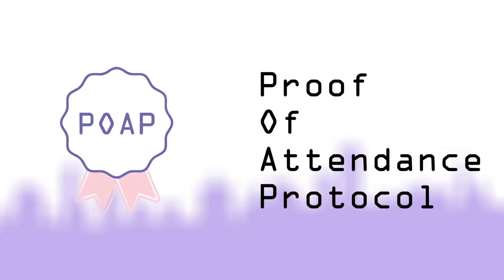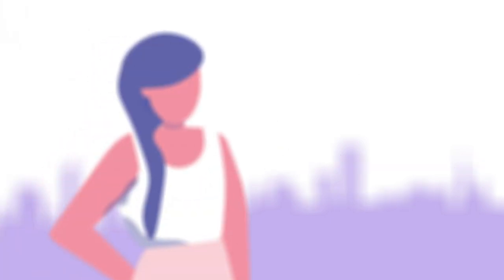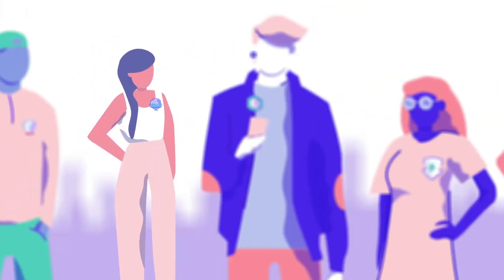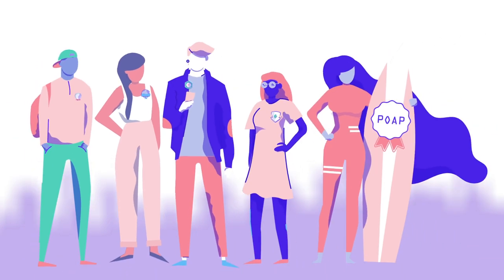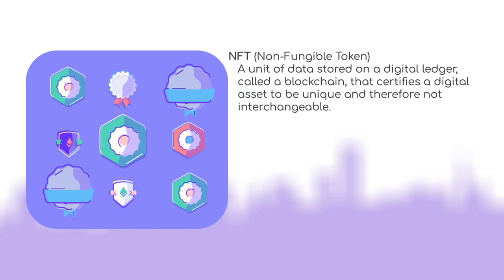What is a POAP? POAP stands for Proof of Attendance Protocol and is a system that allows humans to collect badges for participating in an activity or performing a specific action in person or digitally. The POAPs themselves are NFTs that reside on the Ethereum blockchain inside of a user's wallet.